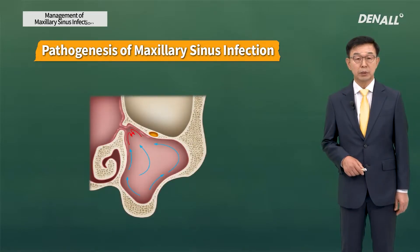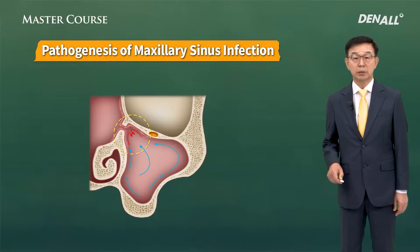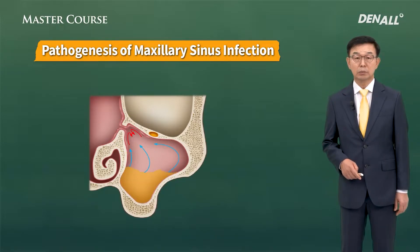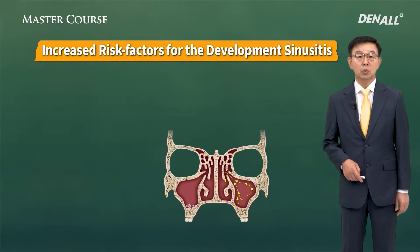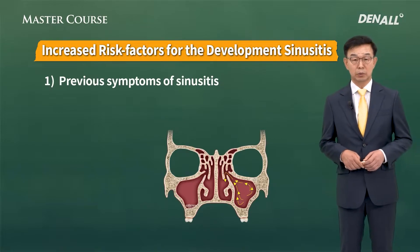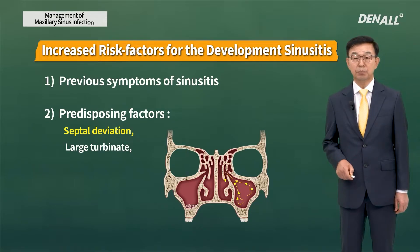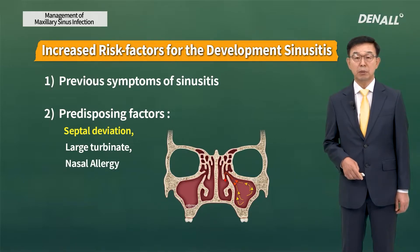If the middle ostium is blocked due to multiple reasons and no appropriate drainage is done, it can lead to sinus infection. Patients who have had sinusitis can experience it again. It can also occur due to insufficient drainage due to septal deviation or enlarged turbinate. If the patient has severe rhinitis, drainage can also be insufficient and this can also lead to frequent sinusitis.